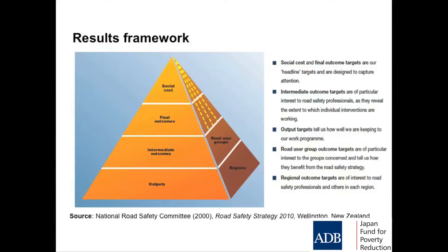This pyramid is different to the triangle we looked at earlier in the week. It's simply saying here's your social cost, here are your final outcomes — numbers of deaths and serious injuries. Your social cost is the value of statistical life multiplied by the number of fatalities and serious injuries. Intermediate outcomes are those things that are absolutely reliable predictors of death and serious injury. If mean speeds go up by 1%, fatalities will go up by 5%.